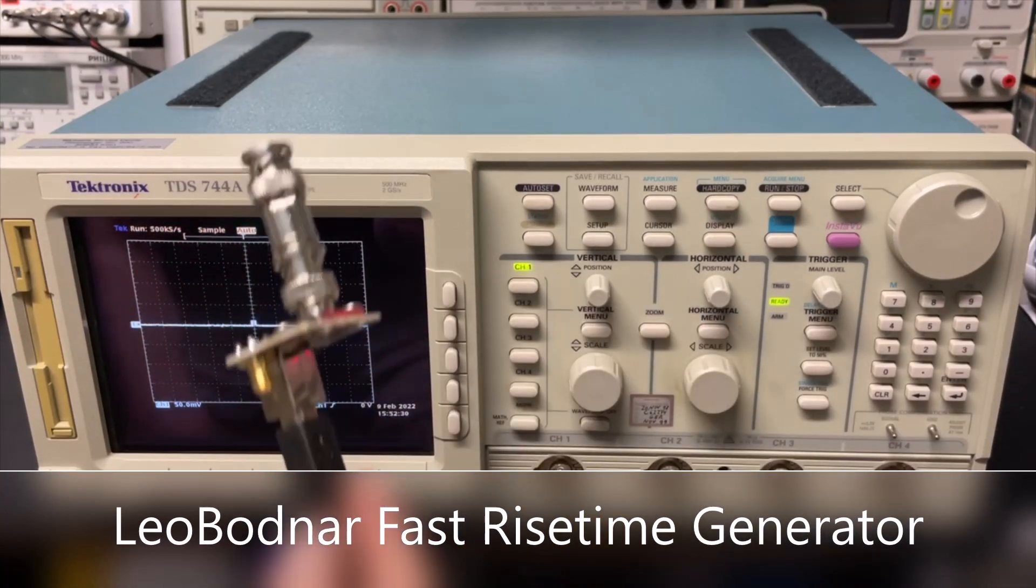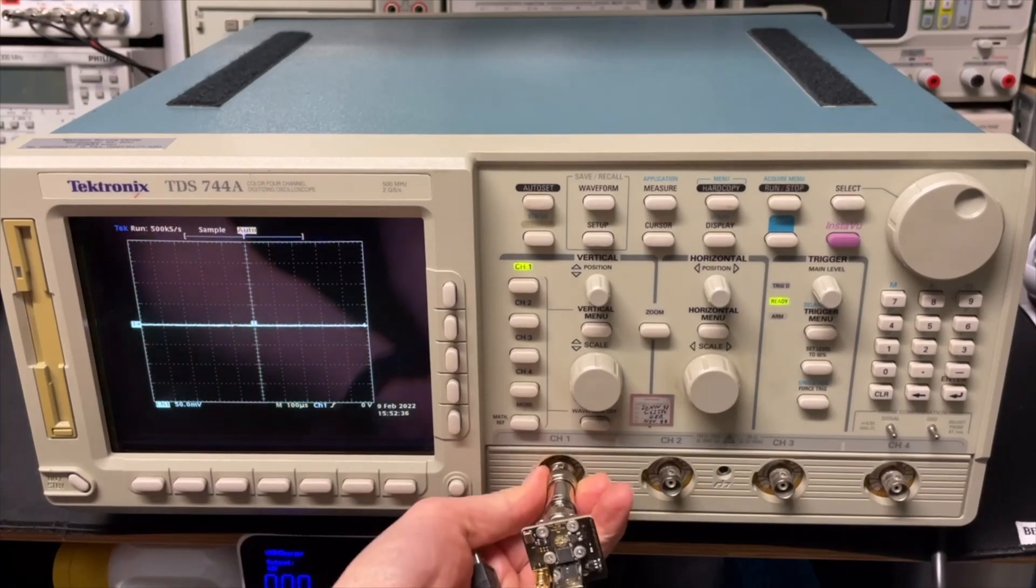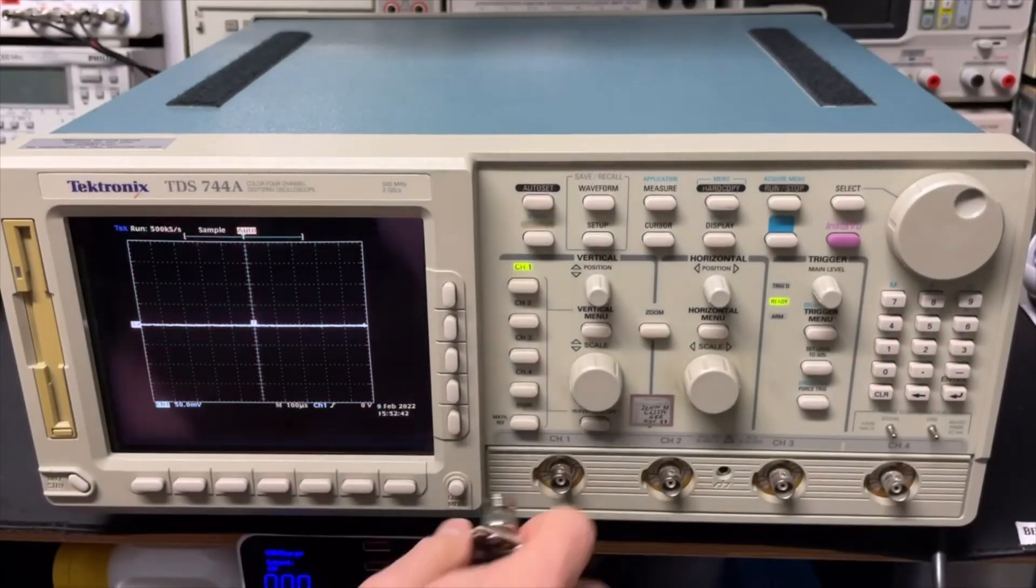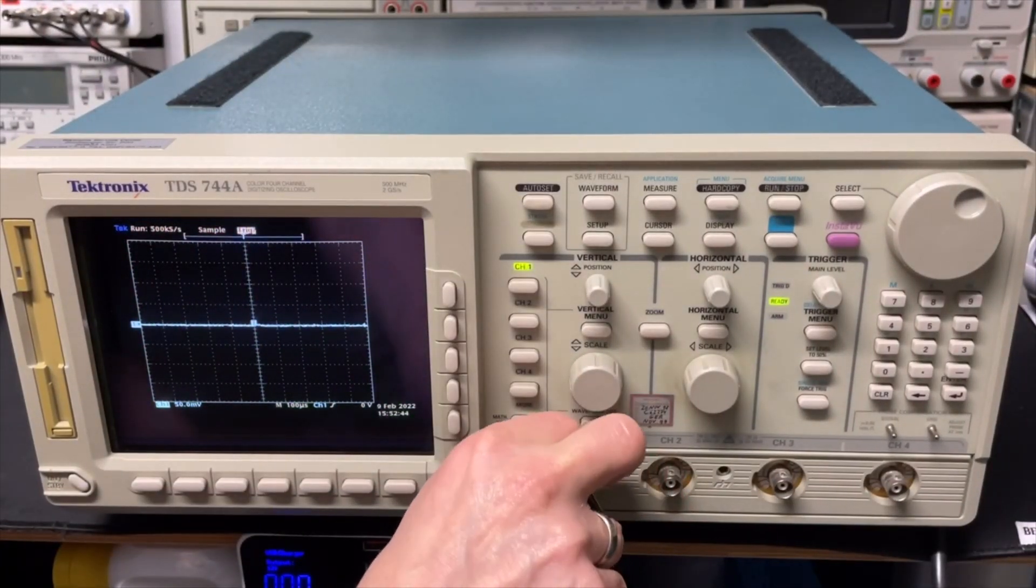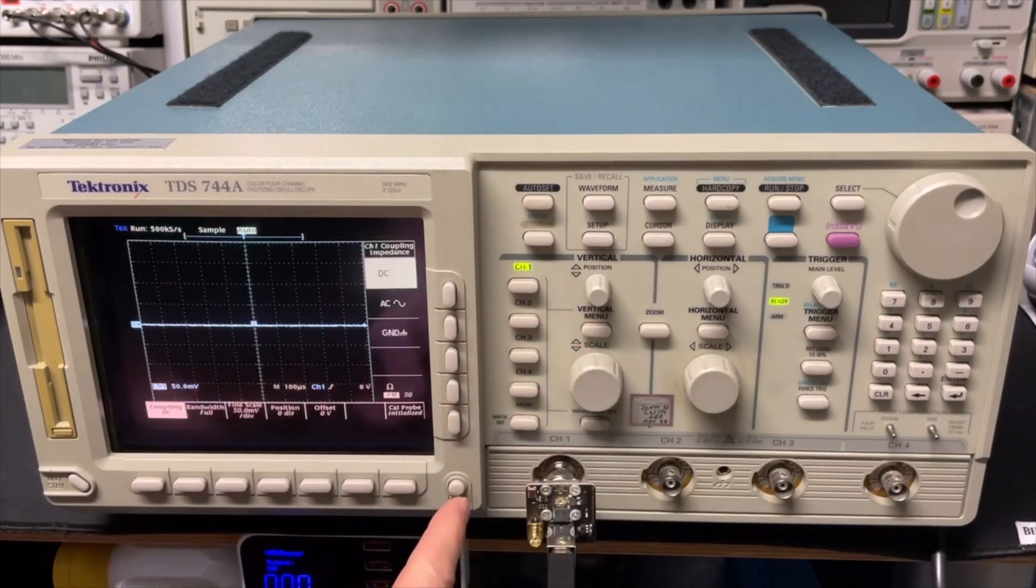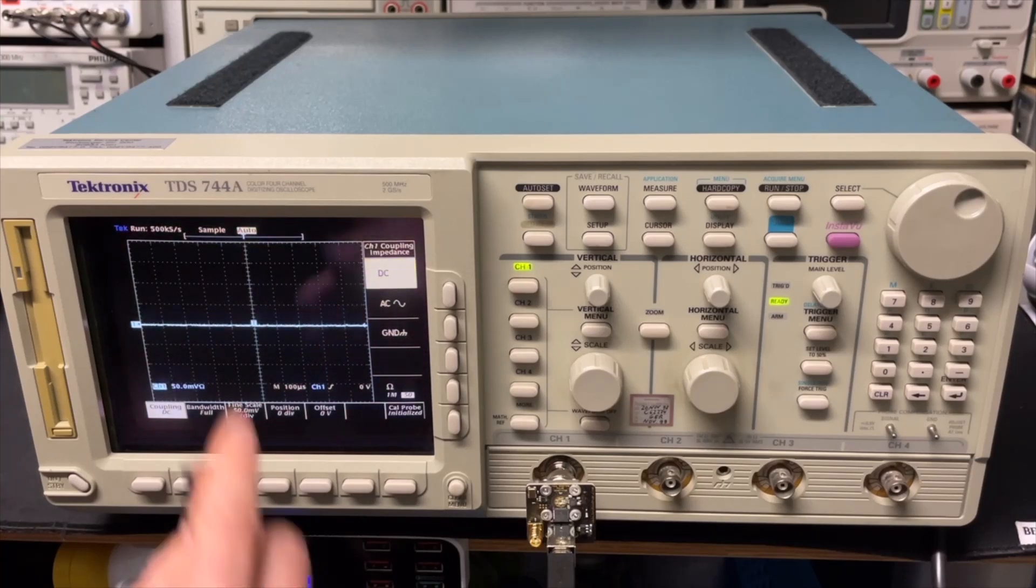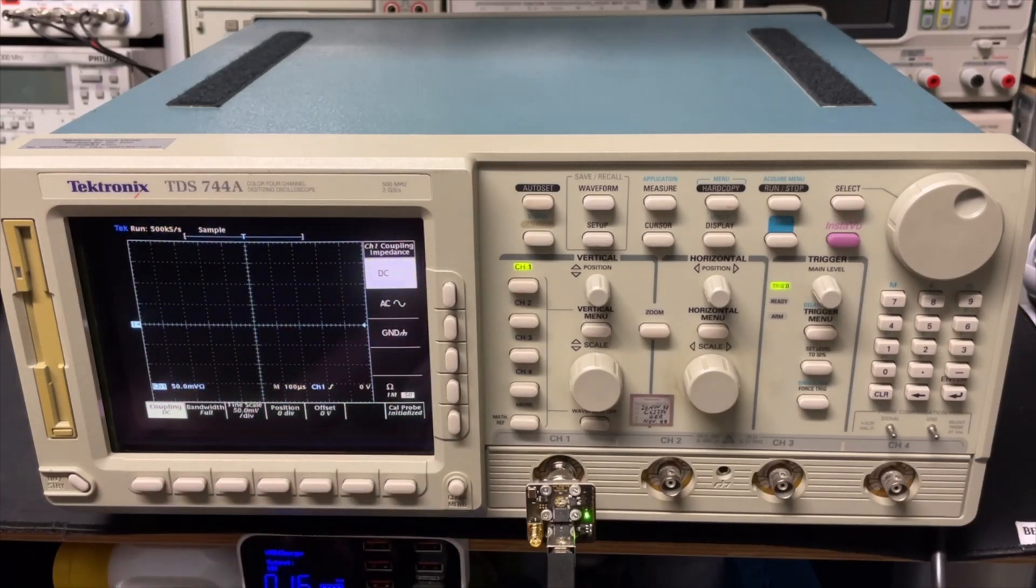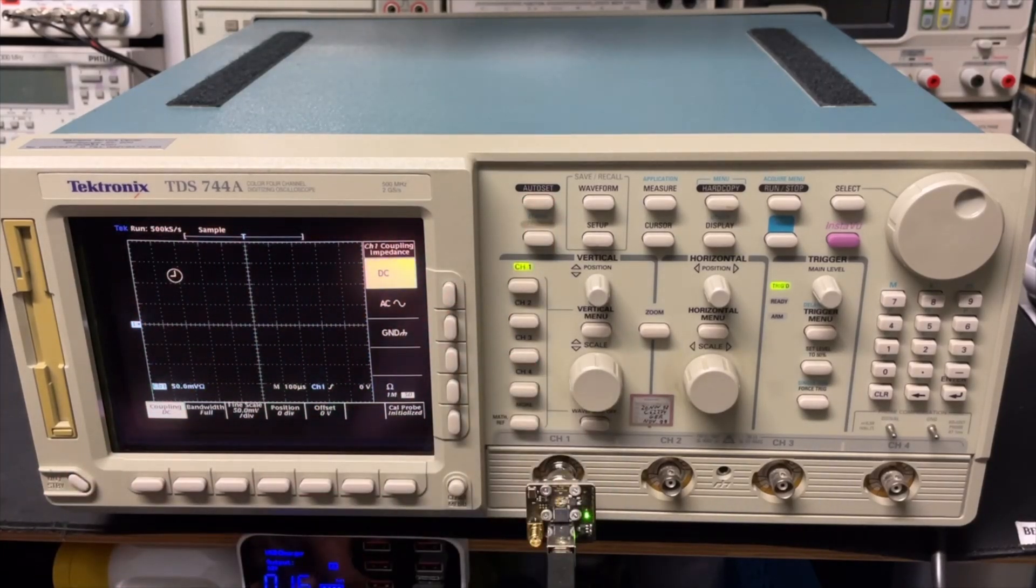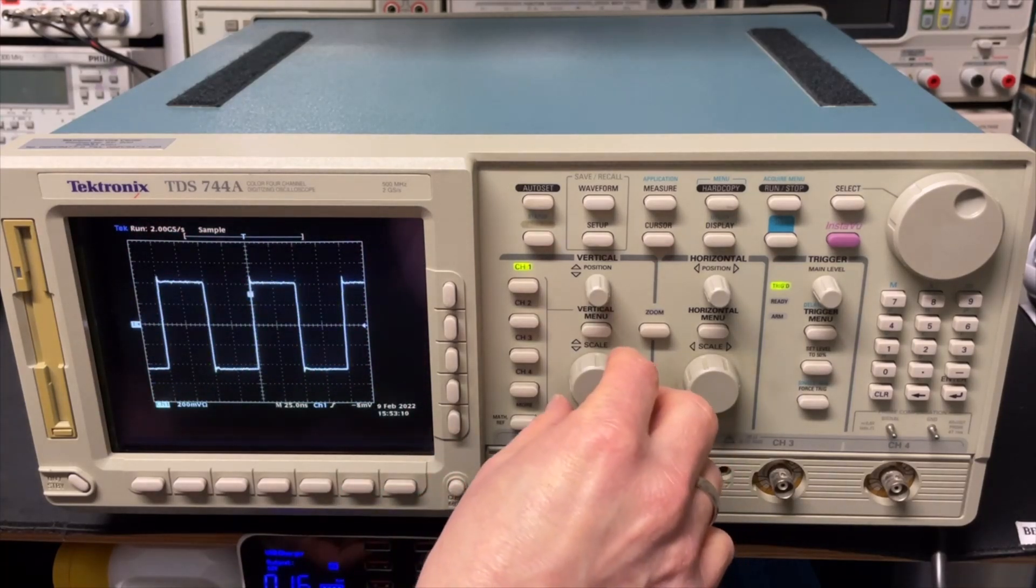I'm going to play with my fast rise time oscillator. The oscilloscope should be able to go to 50 ohms, so I don't need the terminator. You can hear the relay click. Coupling is okay. Let's put the signal in and push the auto set button. Let's zoom in a little bit.